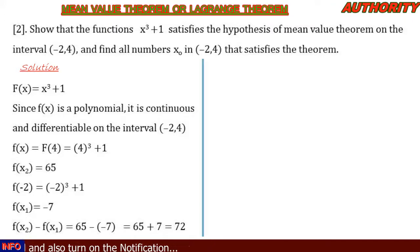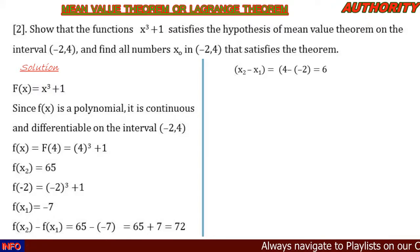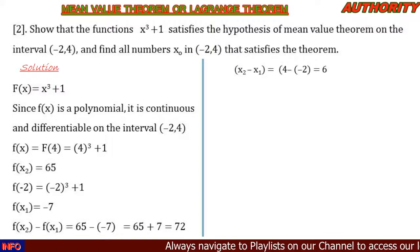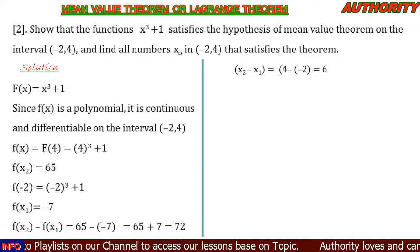Now, f(x₂) - f(x₁) = 65 - (-7) = 65 + 7 = 72. And x₂ - x₁ = 4 - (-2) = 4 + 2 = 6. So f(x₂) - f(x₁) = 72 and x₂ - x₁ = 6.